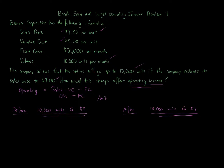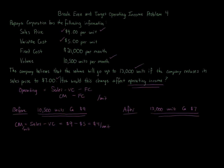First, in the before scenario: contribution margin equals sales per unit minus variable cost per unit. Sales per unit is $9, variable cost is $5 per unit, so the contribution margin per unit is $4. We then take that $4 contribution margin per unit and multiply it by 10,500 units — the before volume given in the problem.